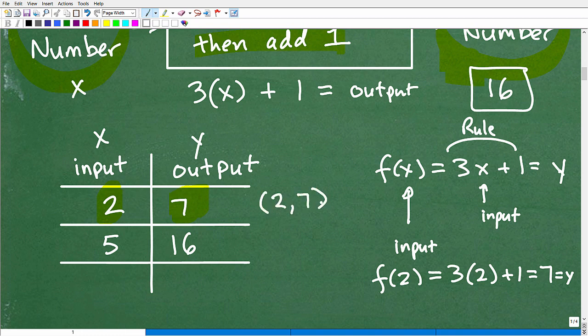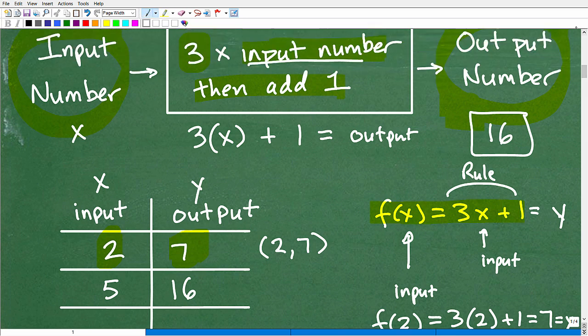All right. So seven is my Y. So when X is two, Y is seven. And that associates with a point on a graph, two, seven. Now you may not even learn that yet. And I want to kind of stop myself at this point, but I want to show you where the algebraic notation, all this little crazy stuff just means the same thing as kind of a written rule. Okay. But we use variables to make our life easier.